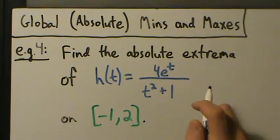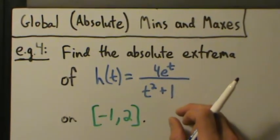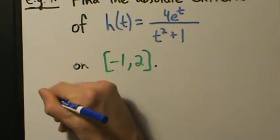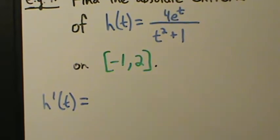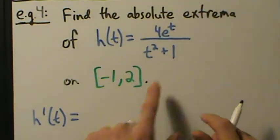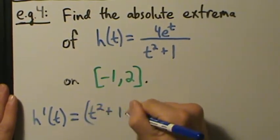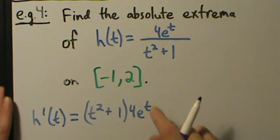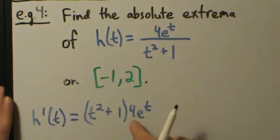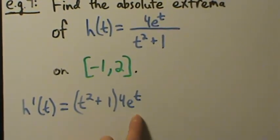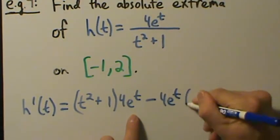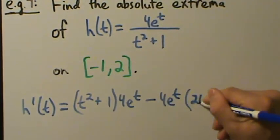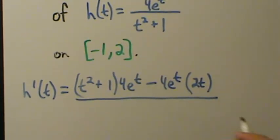The function is a quotient, so we're going to use the quotient rule. So h prime of t equals — quotient rule says the derivative is the bottom times the derivative of the top, minus the top times the derivative of the bottom. The top is 4e to the t, and the derivative of e to the t is just e to the t, so with the constant multiple 4 we get 4e to the t. The bottom is t squared plus 1, so the derivative is 2t. All divided by the bottom squared.